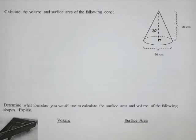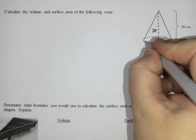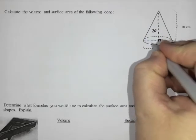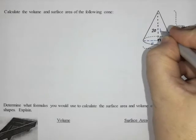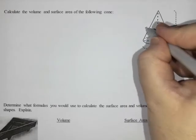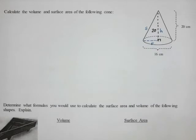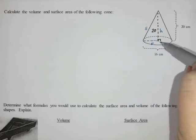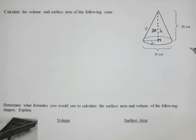On a cone, the dimensions we use are R for radius, H for height, and S for slant. To calculate volume, it is pi R squared H divided by three. To calculate surface area, it is pi R squared plus pi R S.